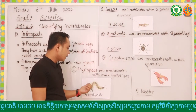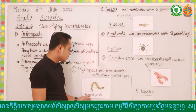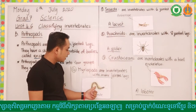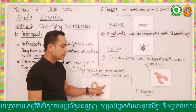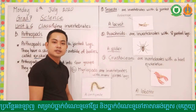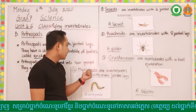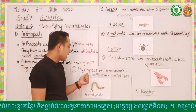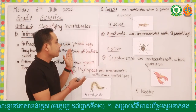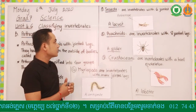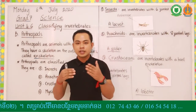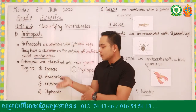Like a centipede - it has many legs jointed with the body and a pair of antennae. These are the things we have learned today. I hope you all remember. You can read the lesson in the book once again to remember more about the four groups of arthropods.